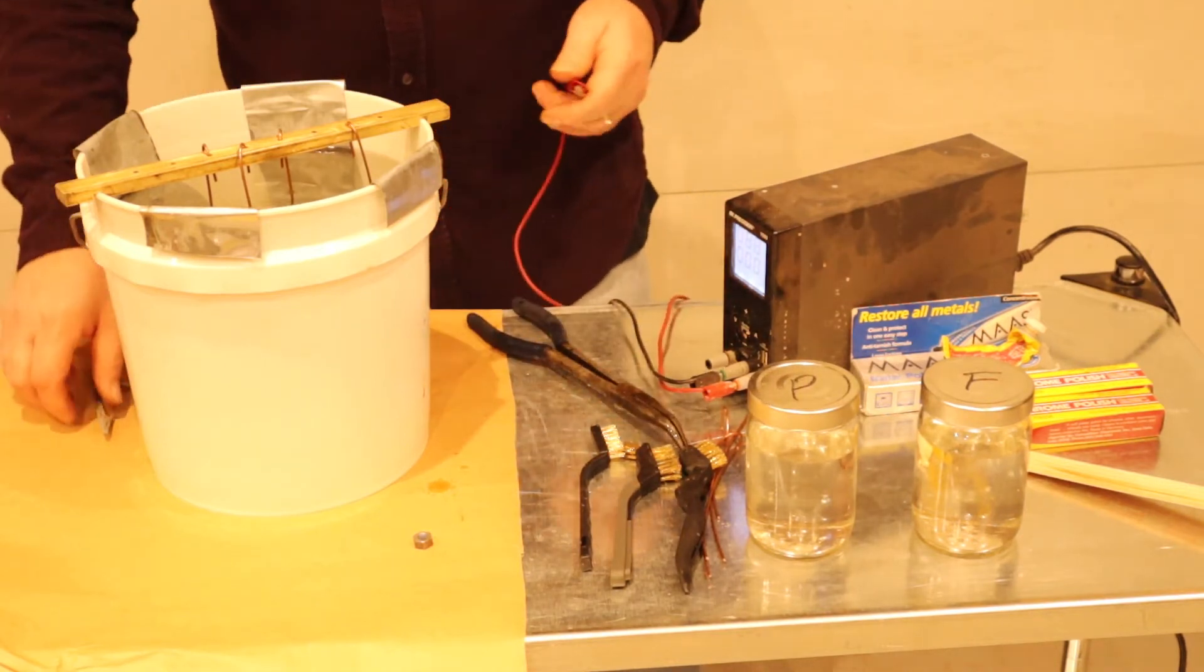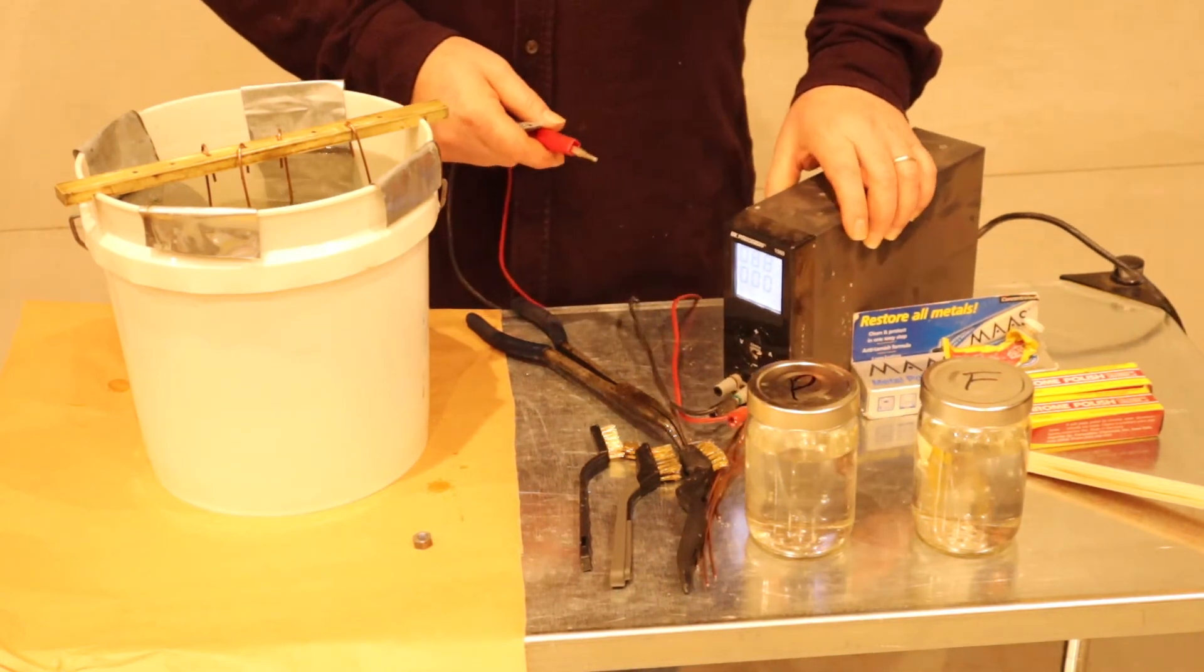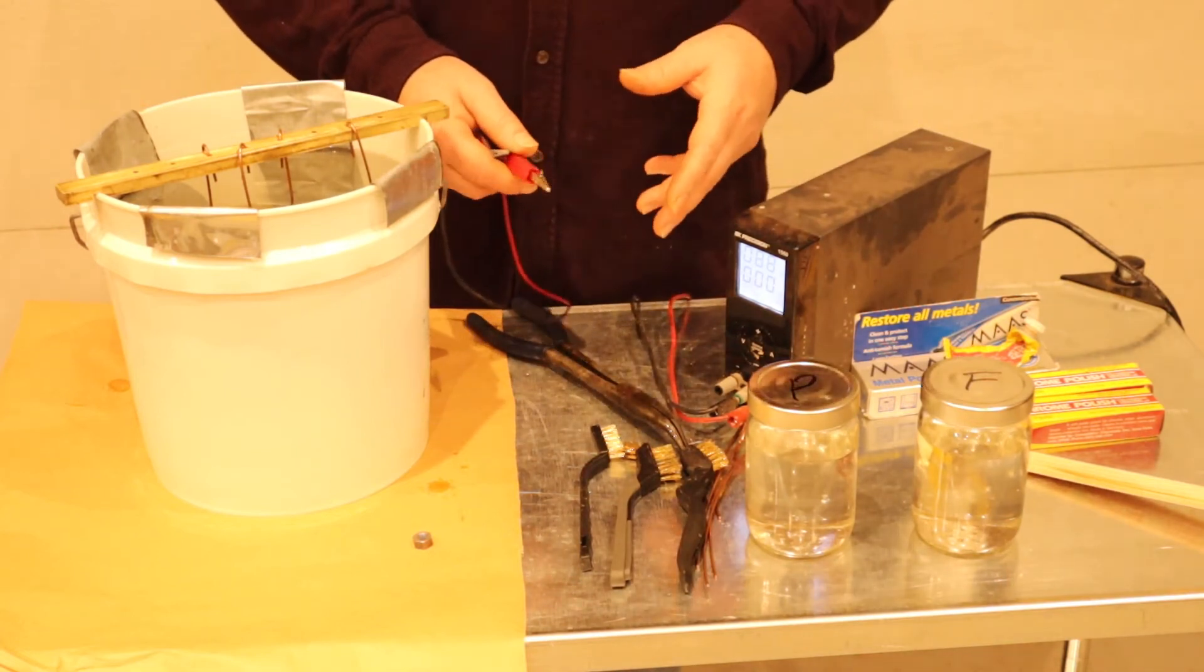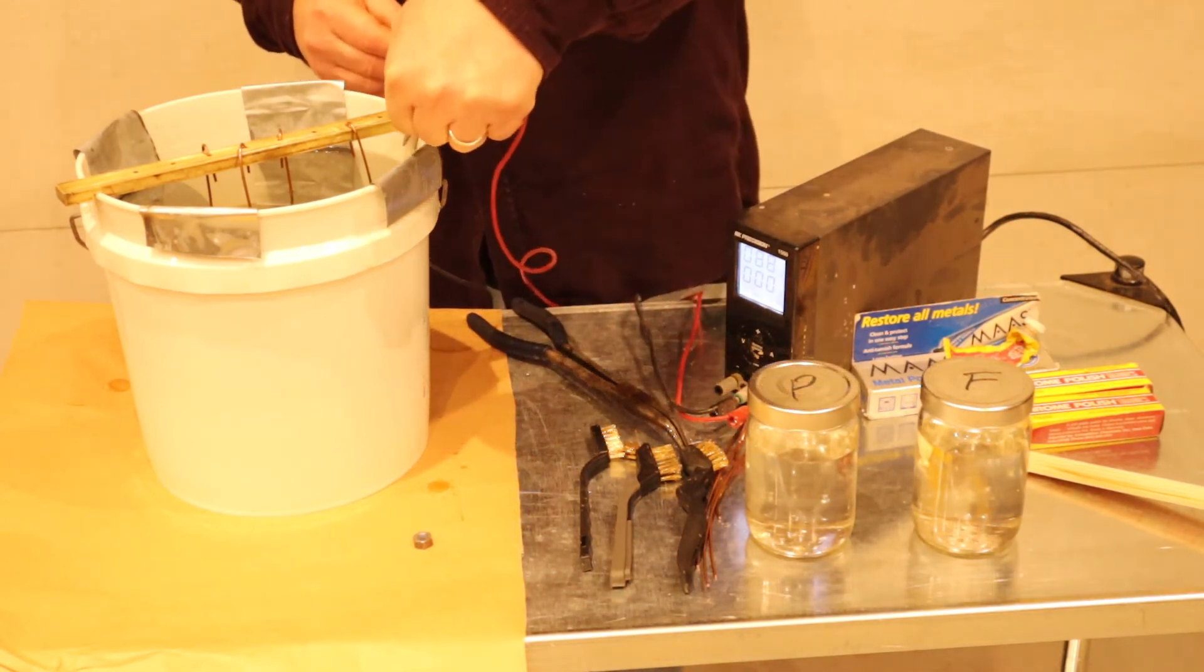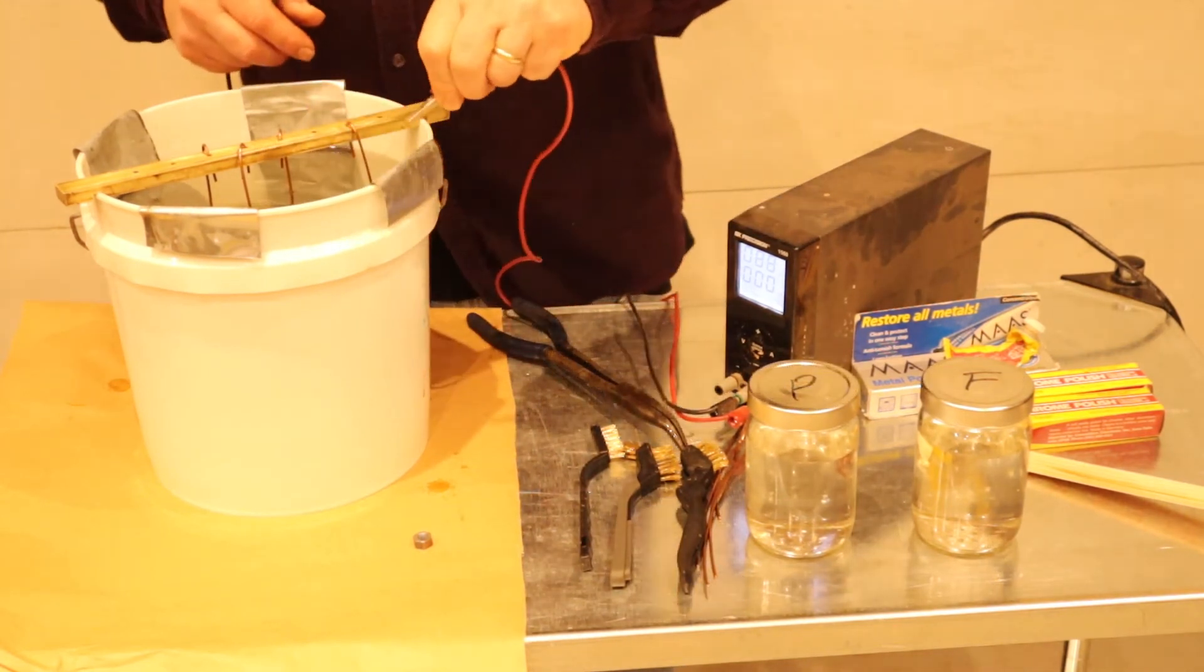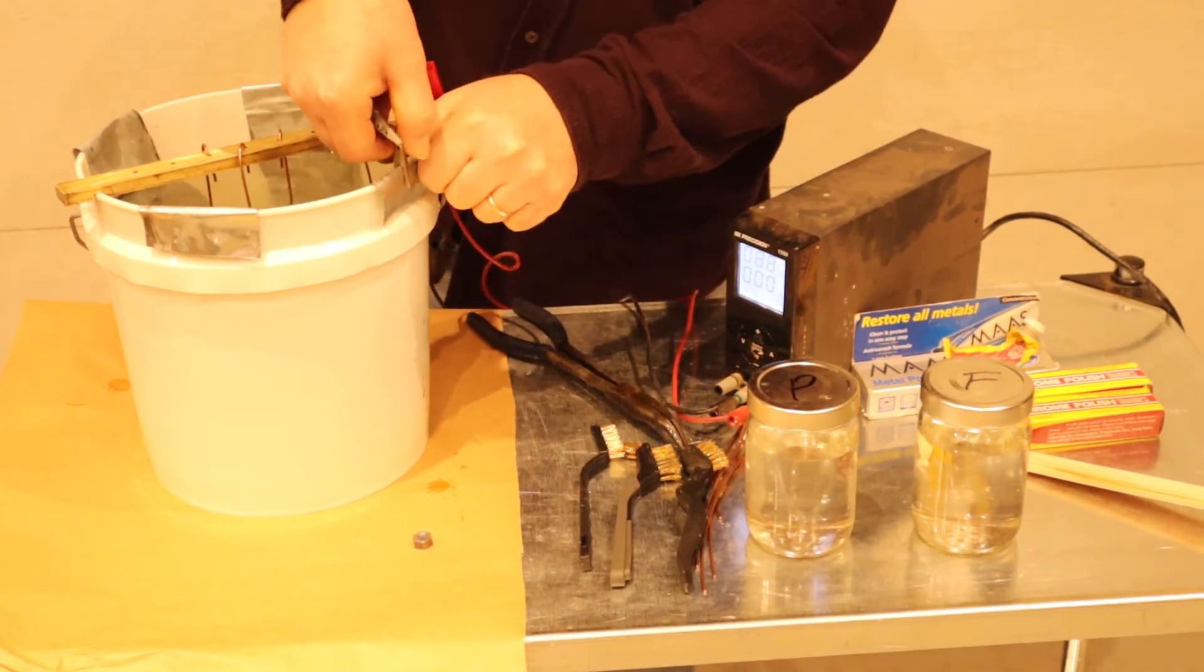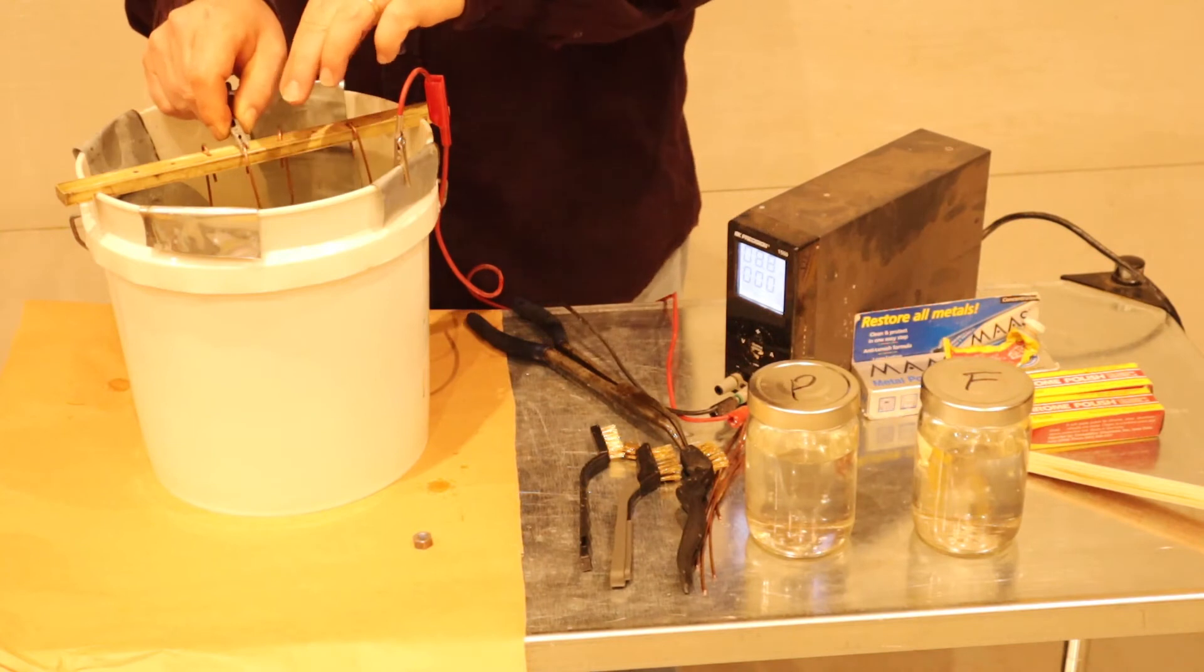What I like to run this at is about 0.4 amps of current, which seems to work really well for a two gallon bucket. What we'll do is we'll hook up the red to the zinc electrodes and the black up to your parts.